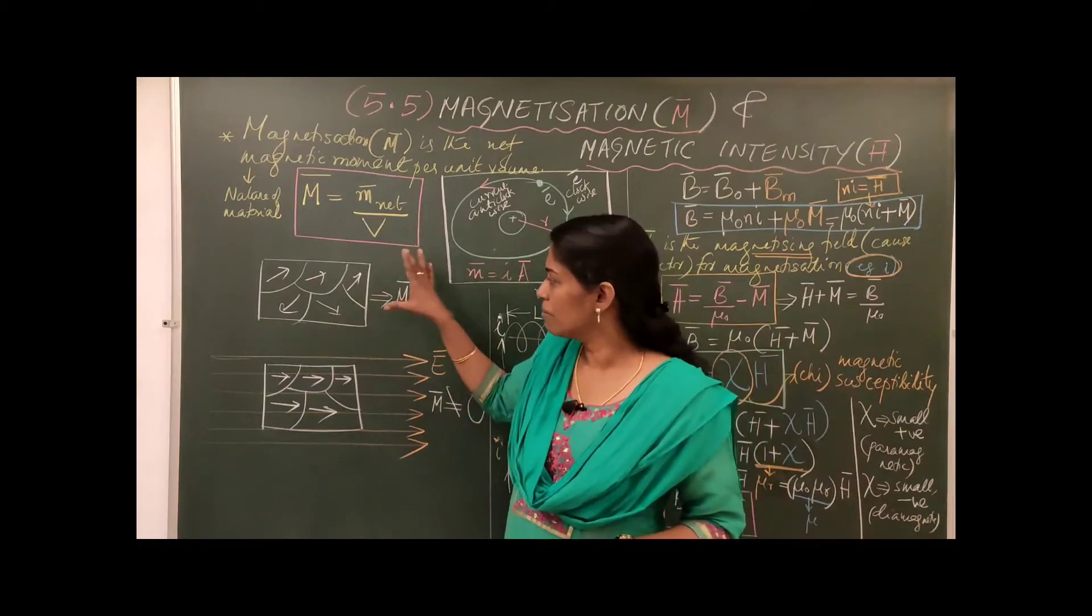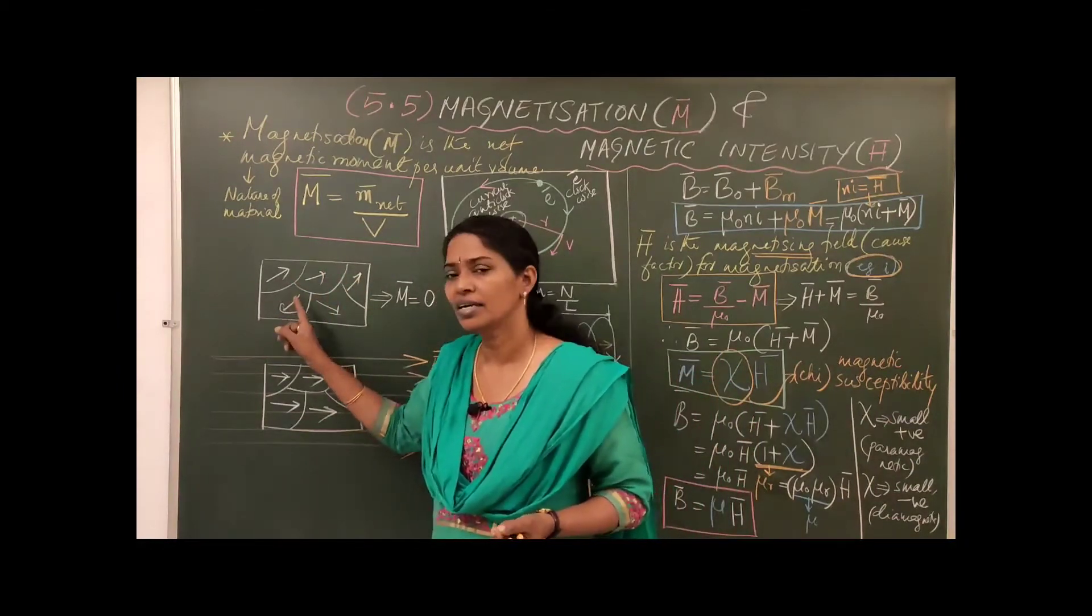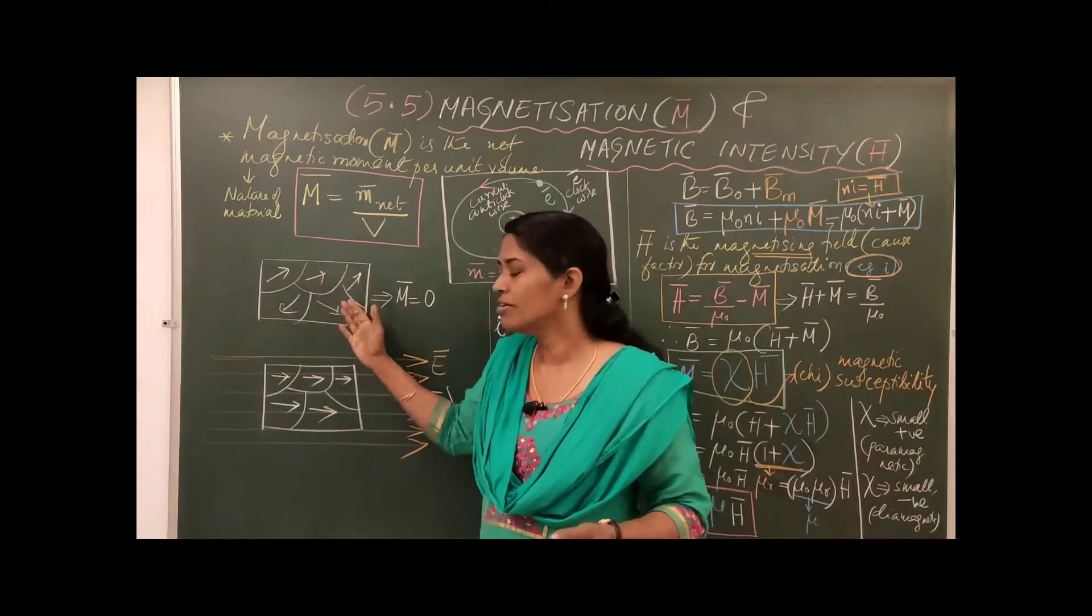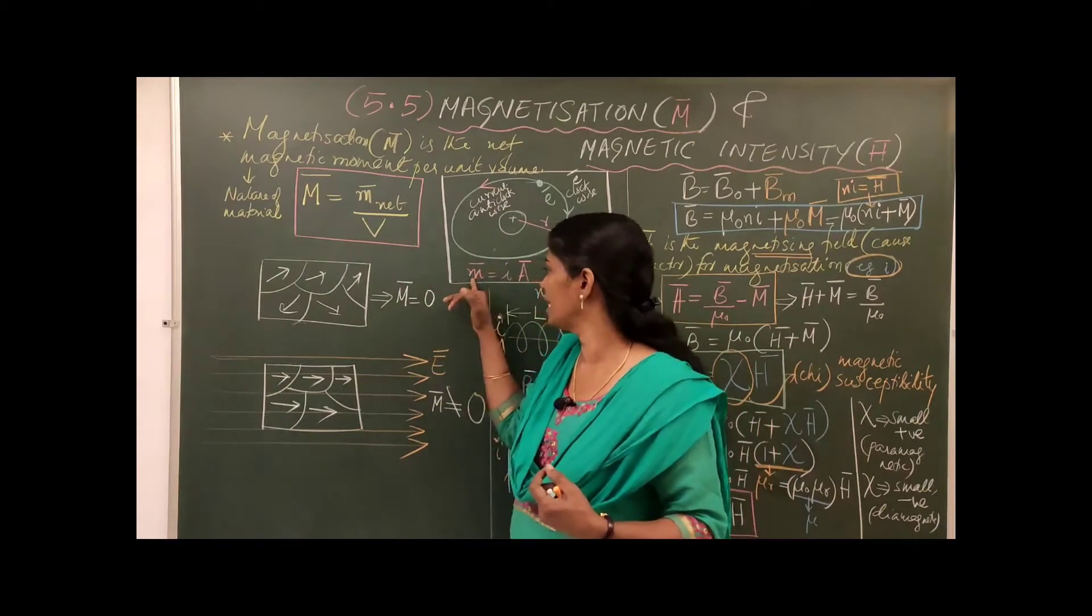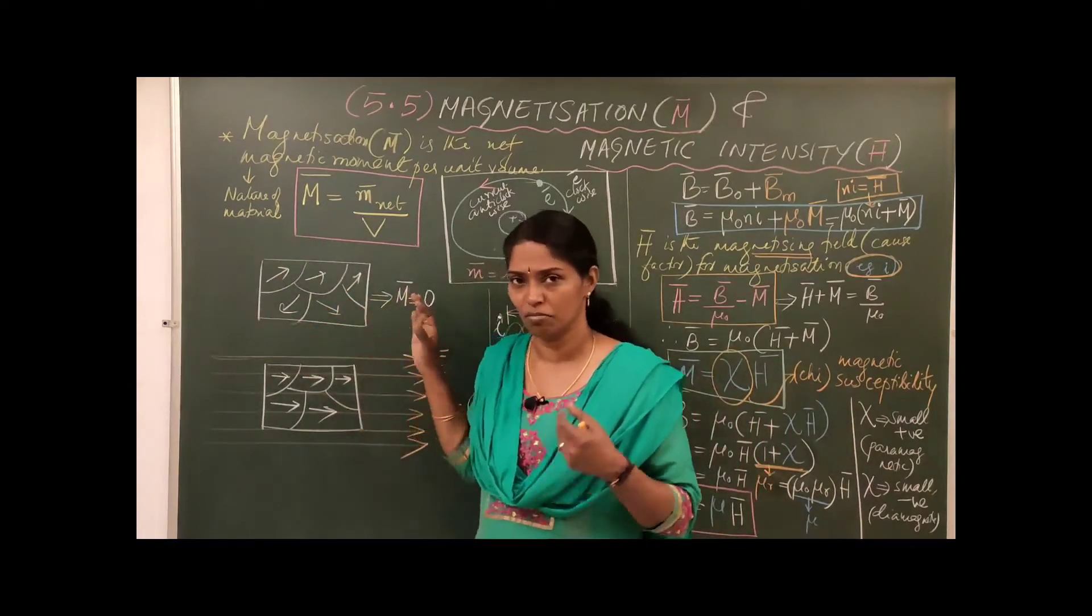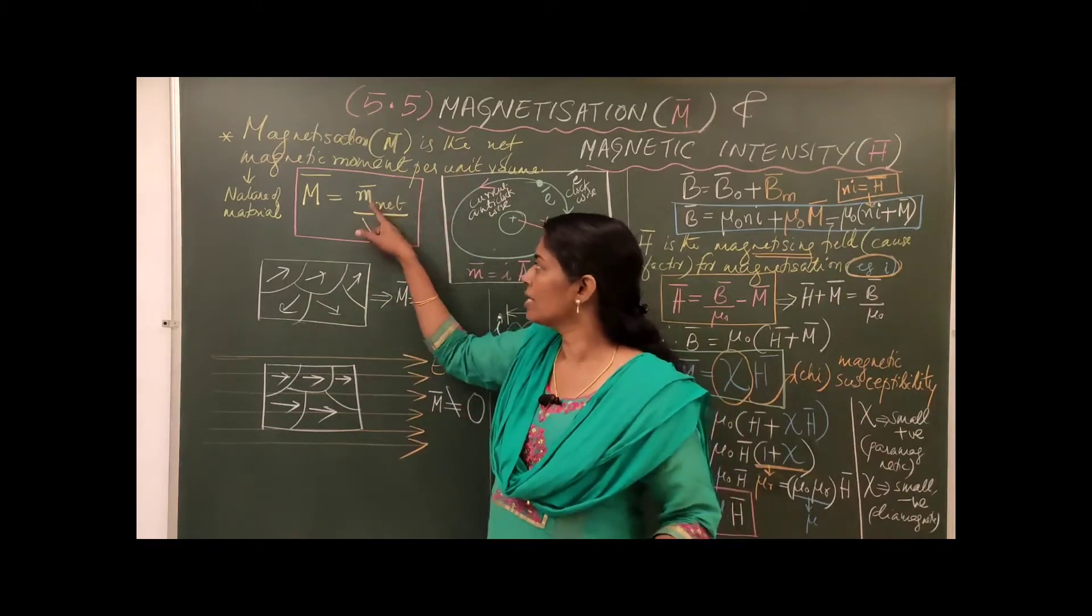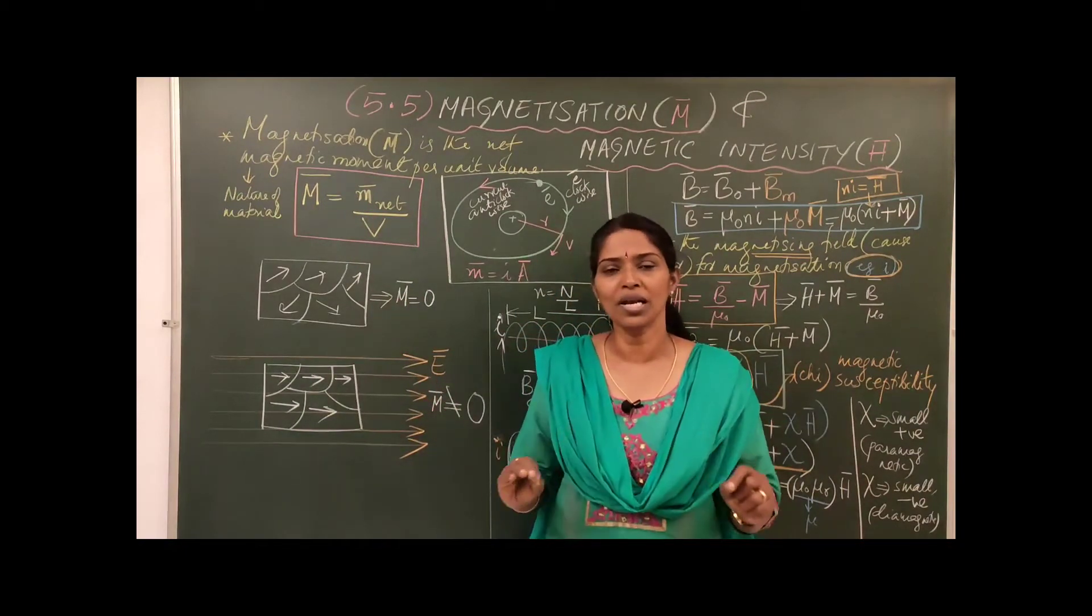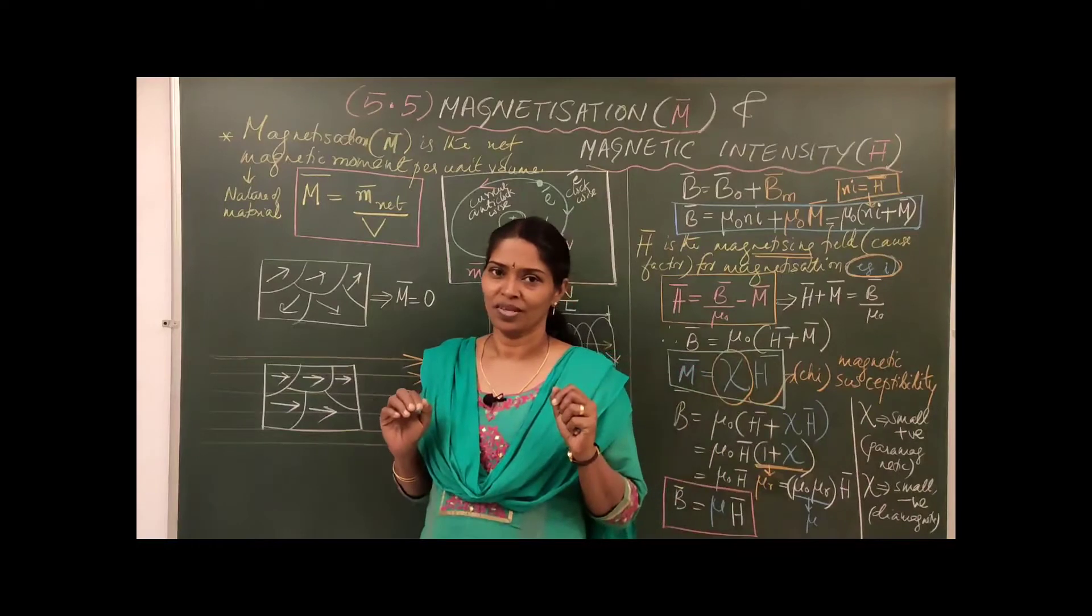If you take the sum of the magnetic moment, if you take the sum of all these magnetic moments, M bar net goes to zero. When M bar net goes to zero, M bar goes to zero. So in usual case the net magnetization will be zero.